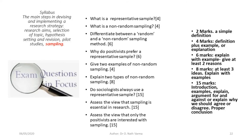Let's now look at some questions you could attempt on this topic of sampling. In a 15-mark question, you should be able to give a proper introduction, examples, explain your arguments for and against, and explain why we should agree or disagree with an issue, with a proper conclusion. When I say why we should agree or disagree, it means identifying which sociologists are speaking, from which perspective, and what arguments they put forward.